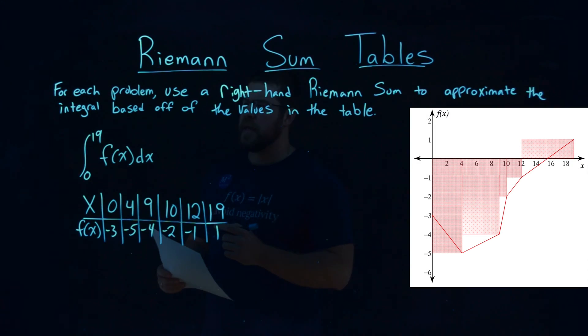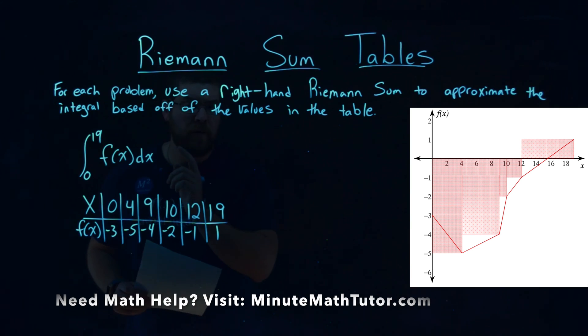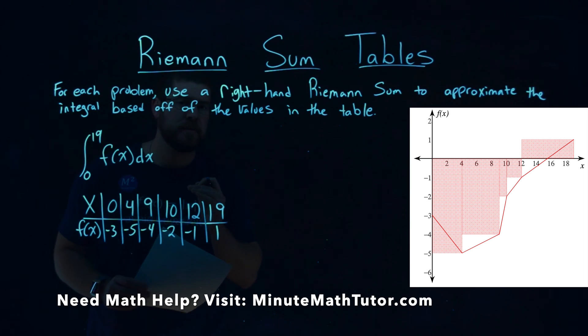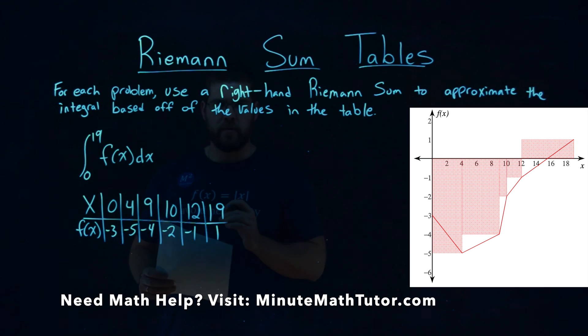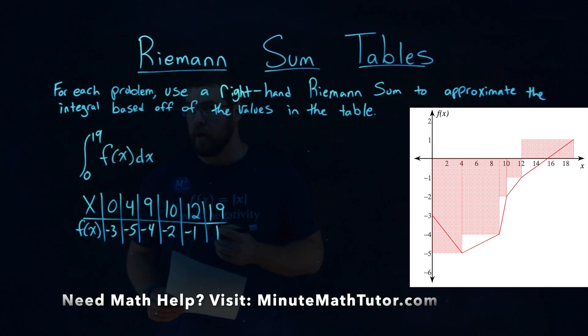We're given this problem right here. The interval from 0 to 19 of f(x)dx, and there's a table that corresponds with it. We want to find the right-hand Riemann-Sum to approximate this integral based off the table below.